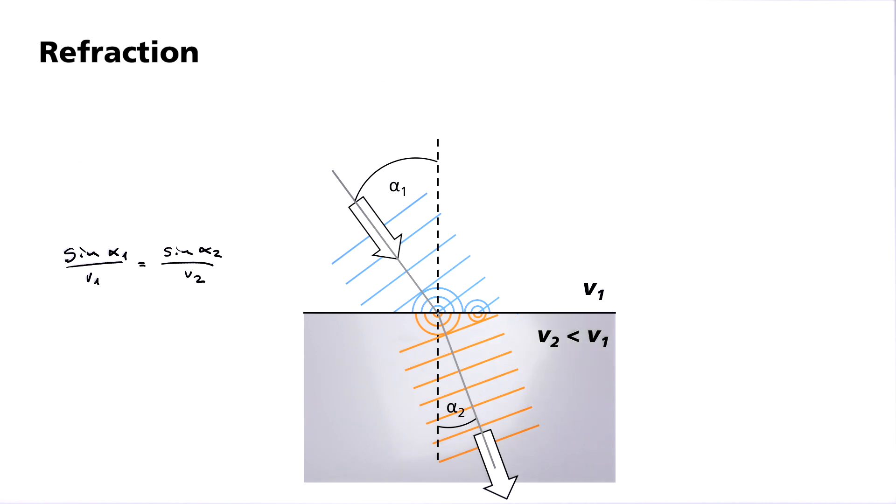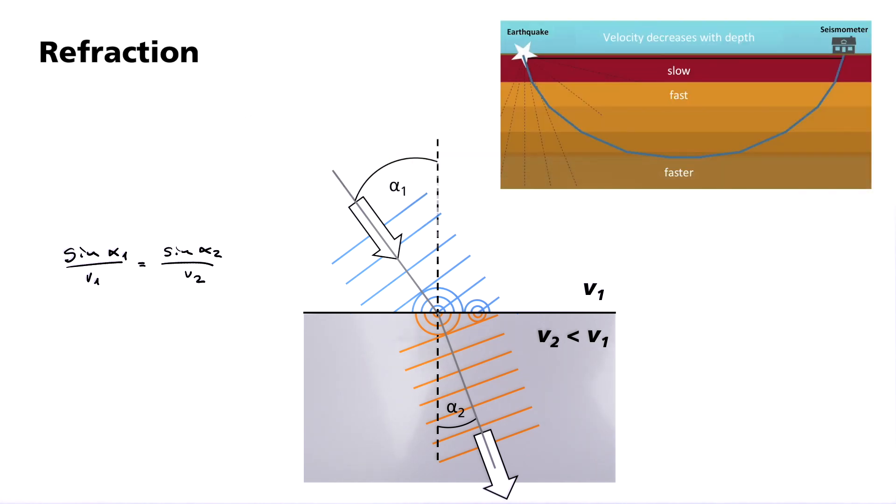At a boundary to a slower medium, refraction occurs towards the perpendicular, at a faster medium conversely away from it. The seismic velocities in the earth typically increase with depth. The raypaths towards the earth's interior are as such refracted away from the perpendicular. The rays that return to the earth's surface are refracted towards the perpendicular. This is the reason why raypaths are typically curved within the earth.